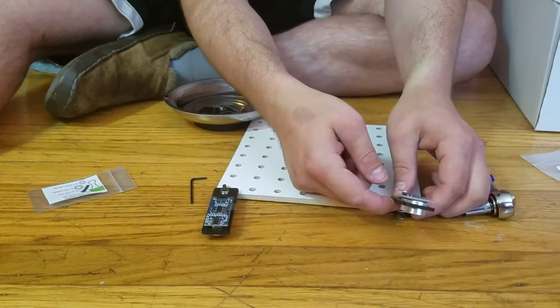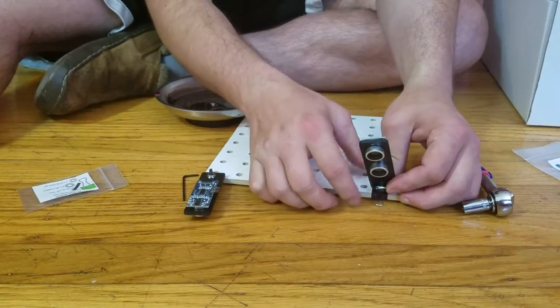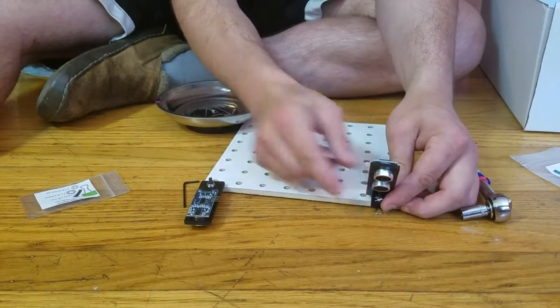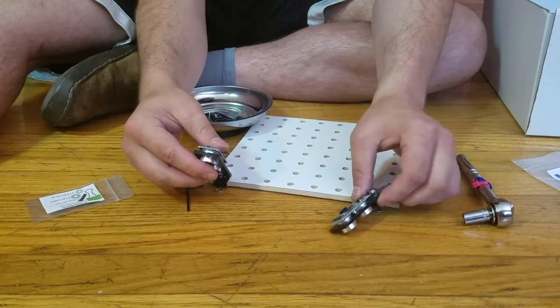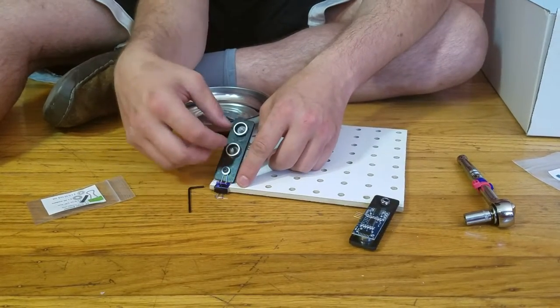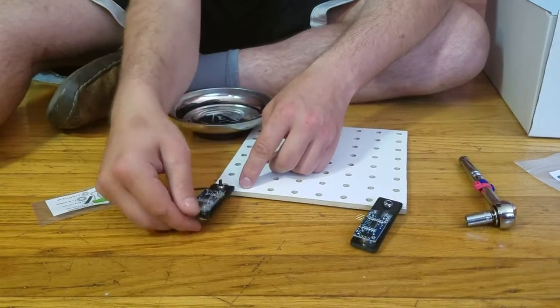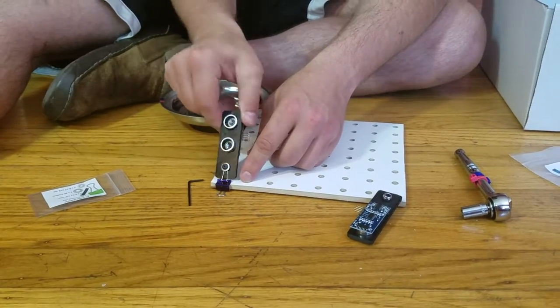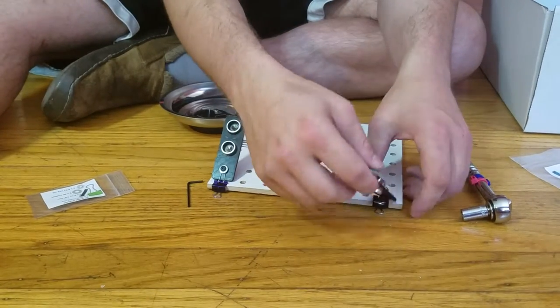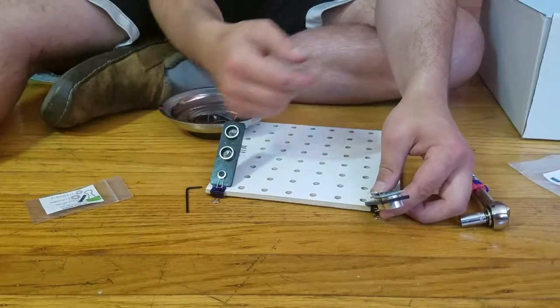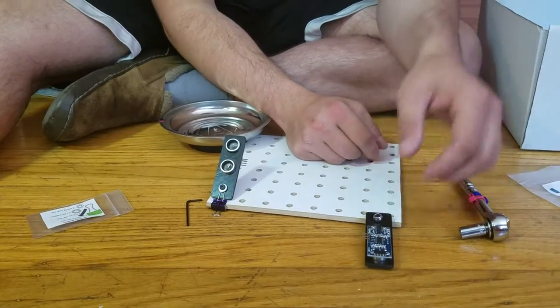And then you're going to do the same exact thing with this side to tighten this all down. And you can see the difference between the two. This kind of flops about. This one does not. It is able to flip up and down, but it doesn't turn this way very much like this one does. So yeah, that's what this step is. Okay, cool.